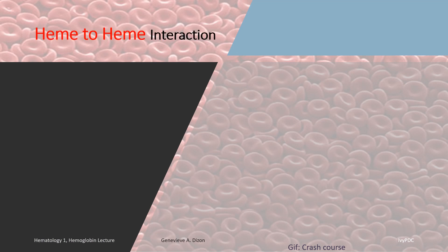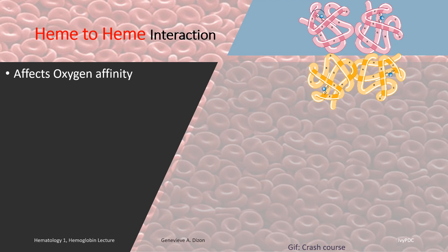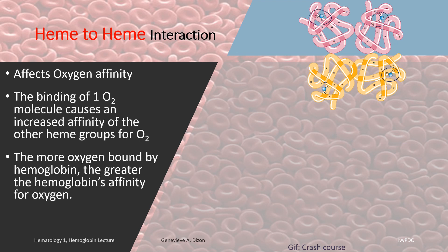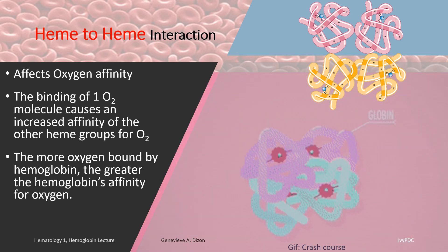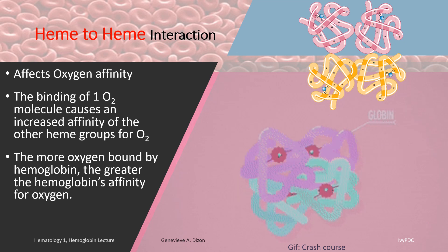The first concept is the phenomenon called heme-to-heme interaction. This describes how each of the heme subunits of a hemoglobin affect each other when it comes to their affinity to oxygen. When a hemoglobin is deoxygenated — meaning no oxygen is bound — there is a decreased affinity to oxygen. But once an oxygen binds with one heme portion, it causes a conformational change that makes the binding of oxygen progressively faster to the other heme portions. Notice how it is more difficult for the first oxygen to bind, but as more oxygen binds to the hemoglobin structure, the faster its affinity to oxygen becomes.